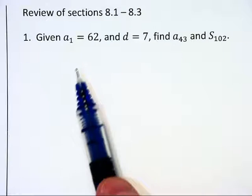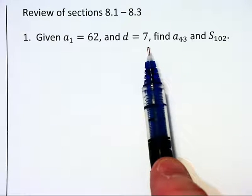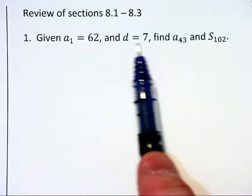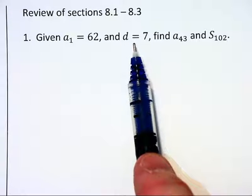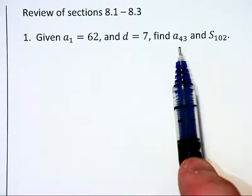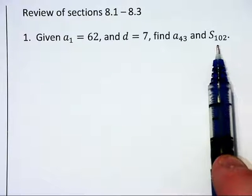Okay, now for a review. We have a first term of 62. We are given a value of d. Notice the value d tells us that this is an arithmetic sequence. We are being asked to find the 43rd term and the sum of the first 102 terms.